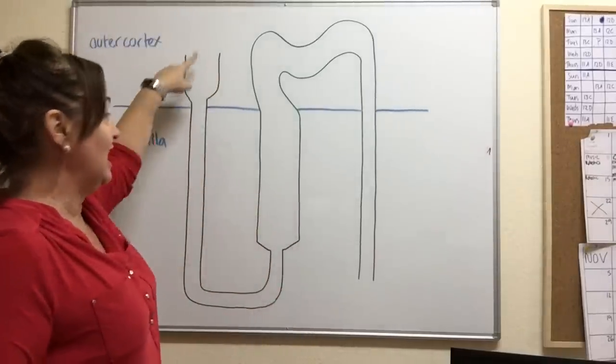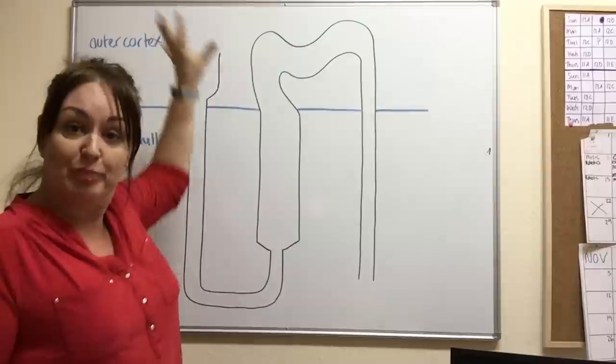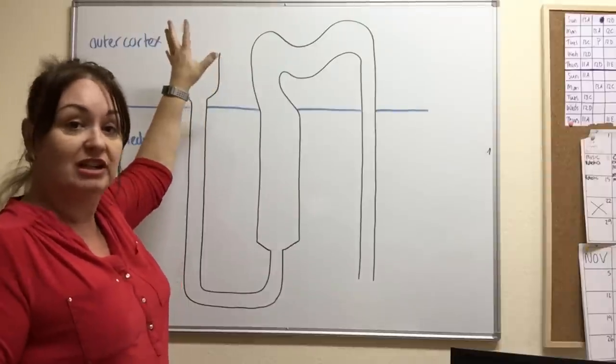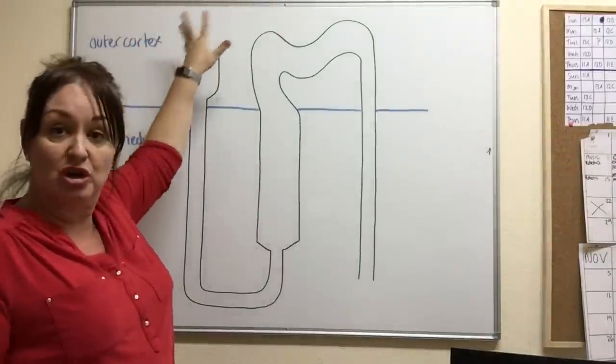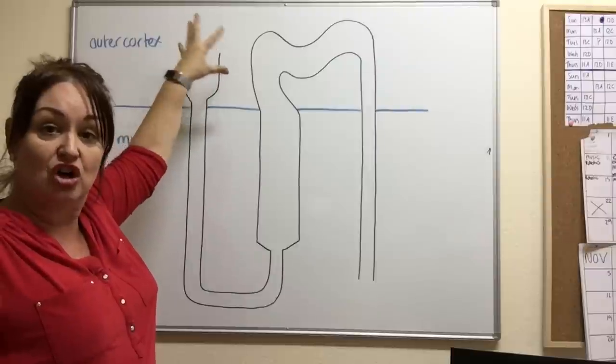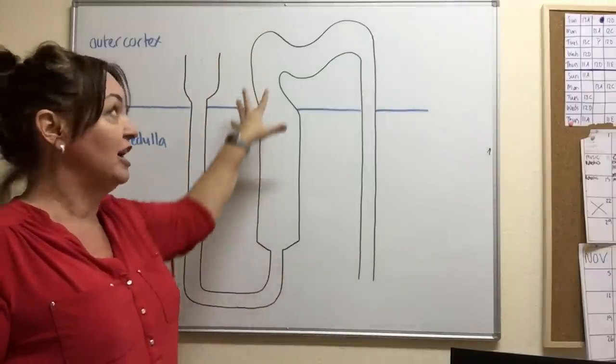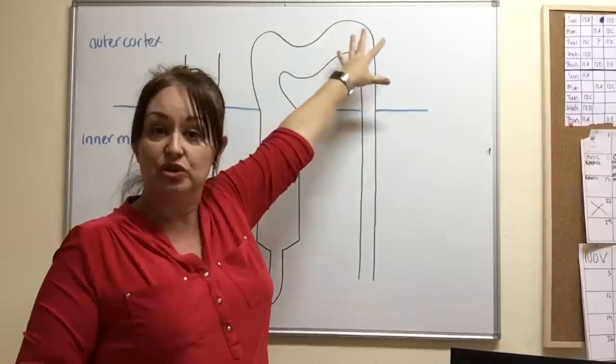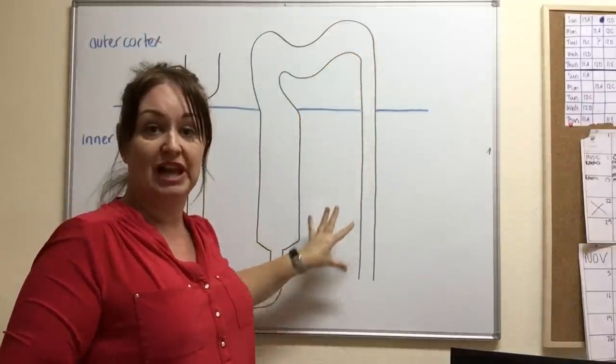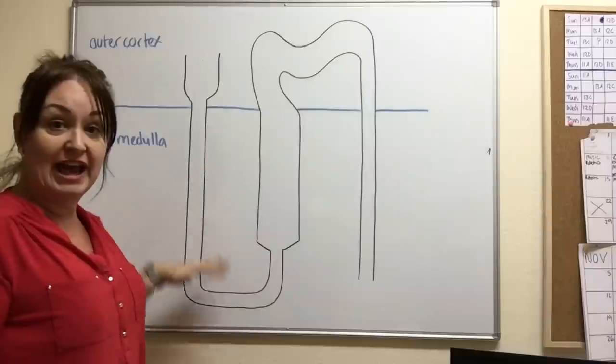So these tubes here, this is where we've had the glomerular filtrate from the Bowman's capsule and the glomerulus and we've already gone through the proximal convoluted tubule and we're now in this bit which is the start of the Loop of Henle. As we carry on, it goes to the distal convoluted tubule and down through the collecting duct. We've got the outer cortex and we've got the inner medulla.